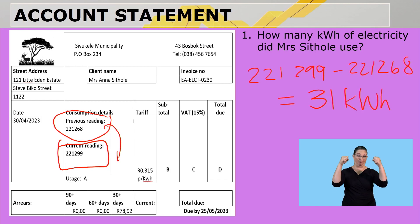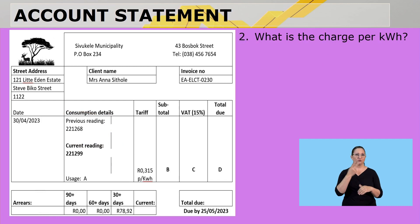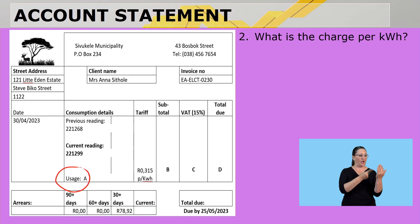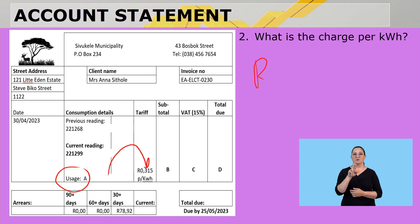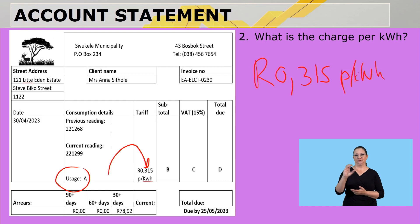I think load shedding really hit them. What is the charge per kilowatt hour? With a question like this, you need to know where to look for it. Next to the usage it will show the kilowatt hours price. The charge is R0,315 per kilowatt hour — so it's almost 32 cents.